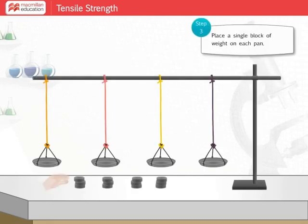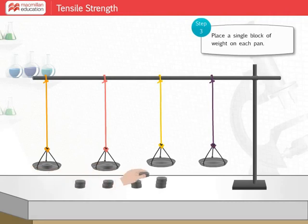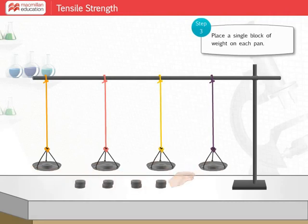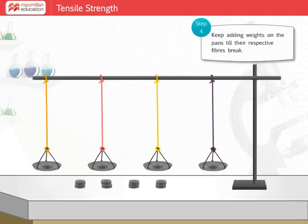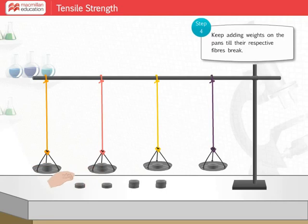Now place a single block of weight on each pan and observe the thread stretch. Keep adding weights on the pans until their respective fibers break.